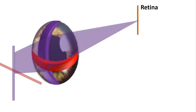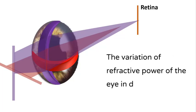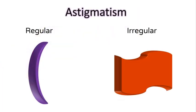However, what is happening here? Both meridians come to a focus at different points. This is called astigmatism. Astigmatism is defined as the variation of refractive power of the eye in different meridians.